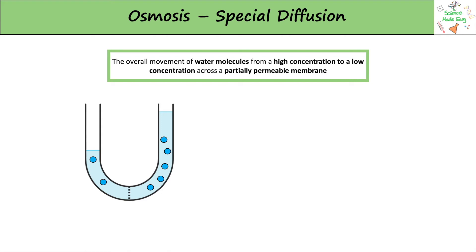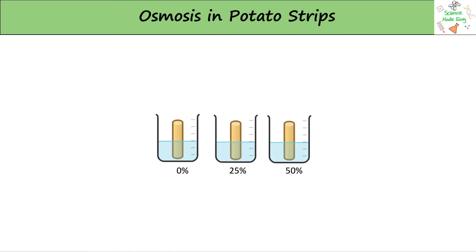Here is an experiment to show osmosis happening in solutions with different solute concentrations. Potato strips have been added as these have a partially permeable membrane.